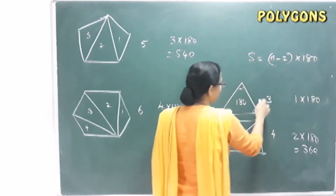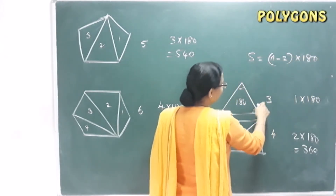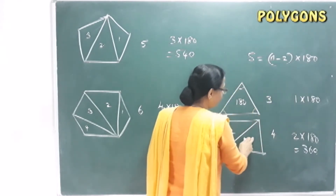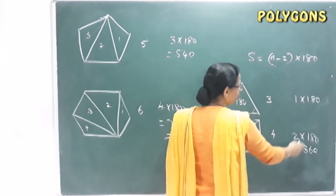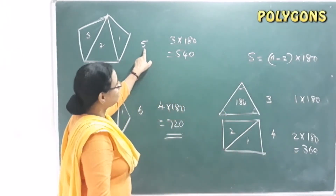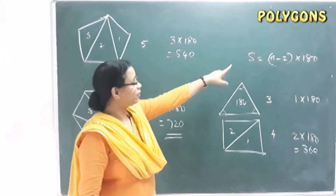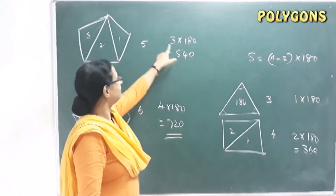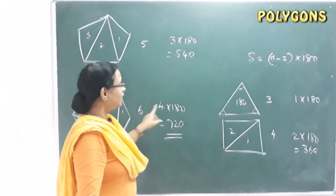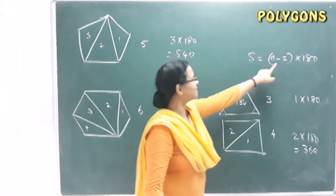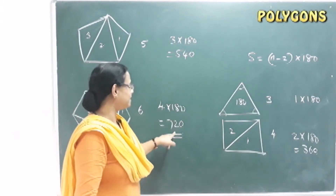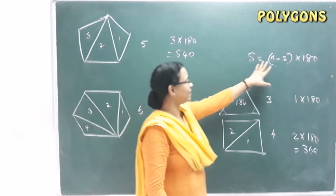Using N minus 2: for a three-sided figure, (3 − 2) × 180 = 1 × 180. For a four-sided figure, (4 − 2) × 180 = 2 × 180. For a five-sided figure, (5 − 2) × 180 = 3 × 180. For a six-sided figure, (6 − 2) × 180 = 4 × 180 = 720 degrees.